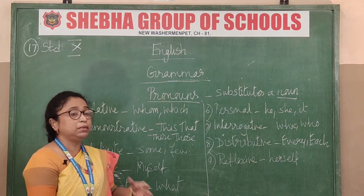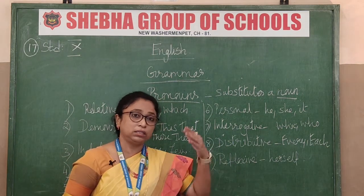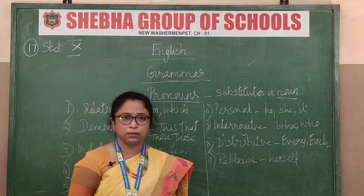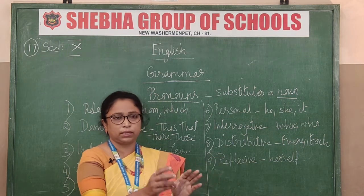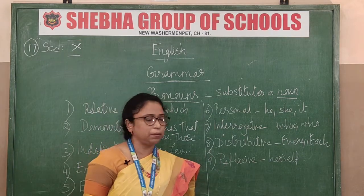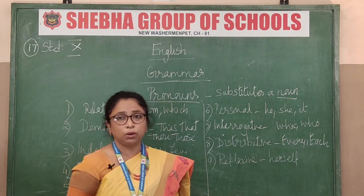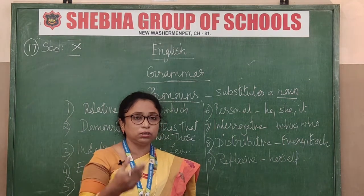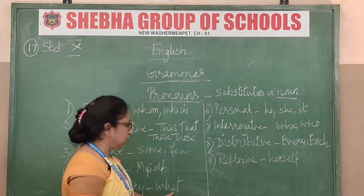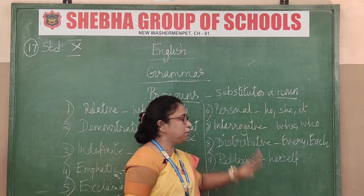The fourth type is the emphatic pronoun — used for emphasizing. For example, 'She herself went to greet the guests.' Here 'she' is one pronoun and 'herself' is another; together they form an emphatic pronoun. The fifth type is the exclamatory pronoun — showing surprise. For example, 'What a beautiful flower!' or 'What a beautiful climate!' — the word 'what' is the exclamatory pronoun.